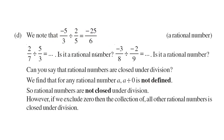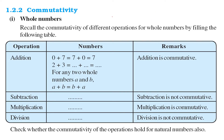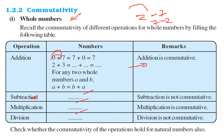Commutativity means when we commute — that is, change order. For whole numbers, if you add 0 with 7 or 7 with 0, addition is commutative — you get the same answer. Subtraction is not commutative — if you subtract 2 from 7 or 7 from 2, you get different results. Multiplication is commutative. Division will not be commutative, since division can give numbers which may not fall into the category of whole numbers.